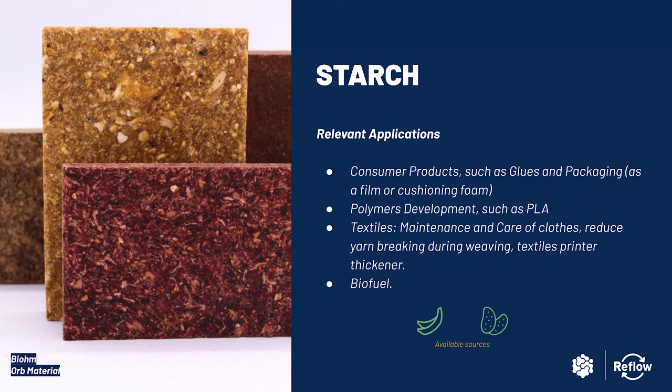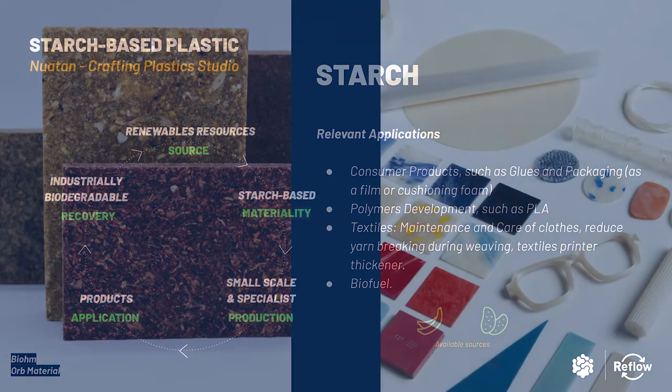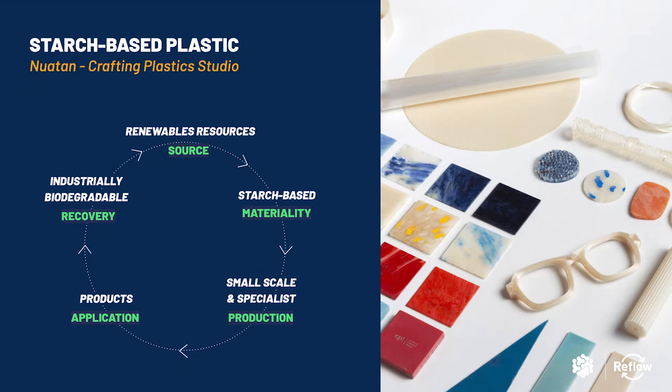Like gelatin, starch has wide applications in the textile world and can be used as a resource for biofuel. A well-known example of starch-based material is NUATAN from Crafting Plastic Studio. This material is completely based on renewable biomass and is industrially biodegradable. One of the benefits of NUATAN is that it can be produced in a variety of production methods, including injection moulding and 3D printing.